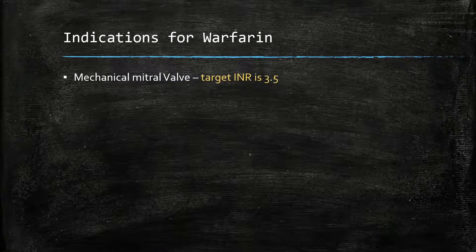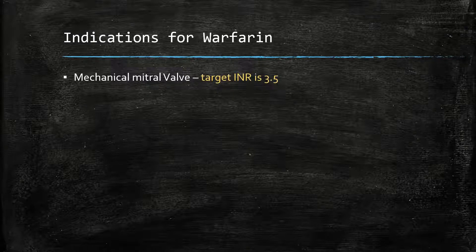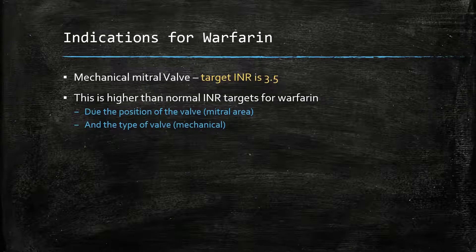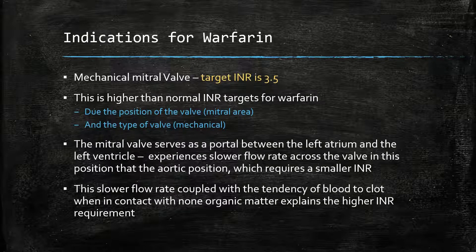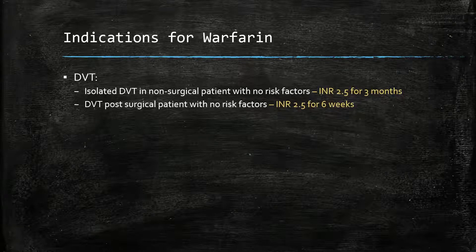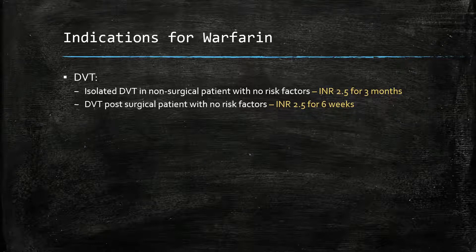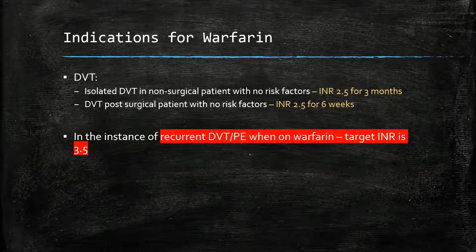Most targets with warfarin have an INR of 2.5. However, the presence of a mechanical mitral valve leads to a target of 3.5. This is higher than normal due to the position of the mitral valve, as flow rates are slower compared to the aortic position, as well as the tendency of blood to clot when in contact with non-organic matter. Warfarin is also indicated for DVT. Isolated DVT in a non-surgical patient with no risk factors has a target INR of 2.5 for three months. DVT in post-surgical patients with no risk factors has the same INR of 2.5 but for a shorter duration of six weeks. In the instance of recurrent DVT or PE when the patient is already on warfarin, we boost the target INR to 3.5.